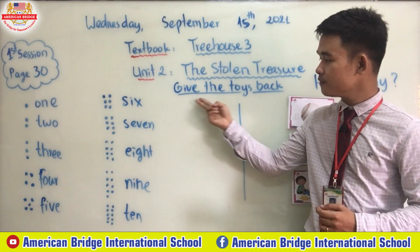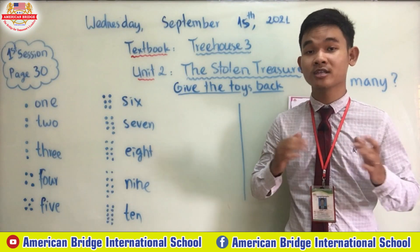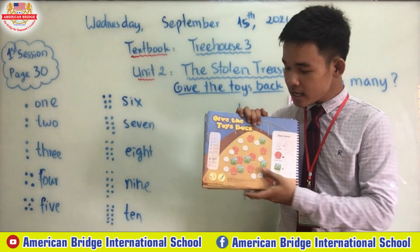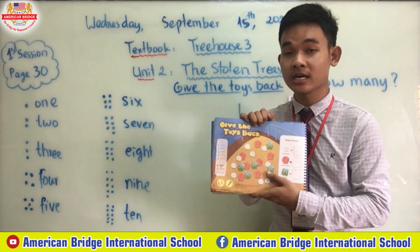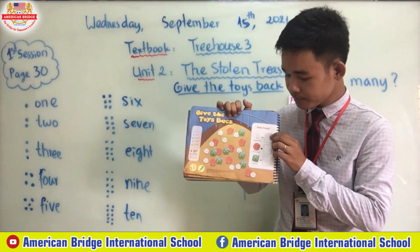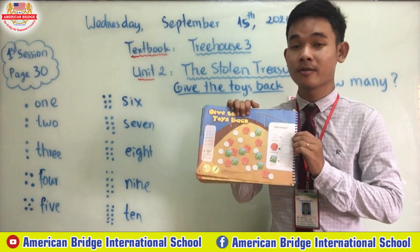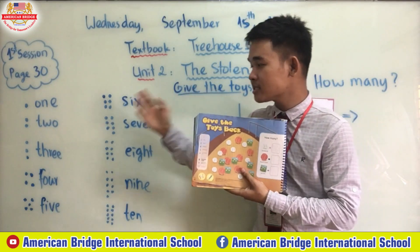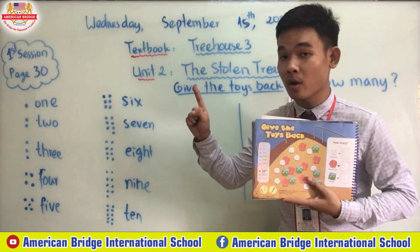Everyone, let's open your book to page 30. Today again we are going to give the toys back to the boys. On this page, we will count the toys that are inside the treasure chest, from number one to number ten.